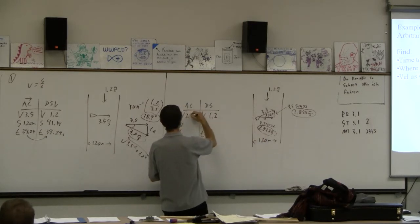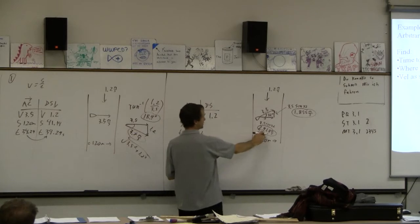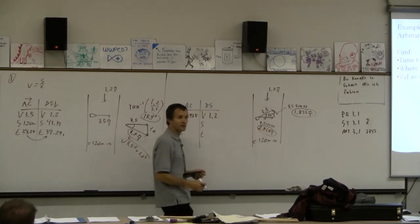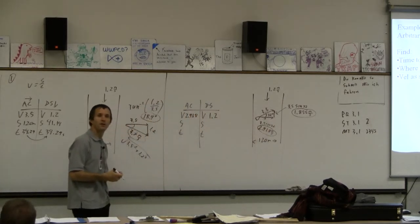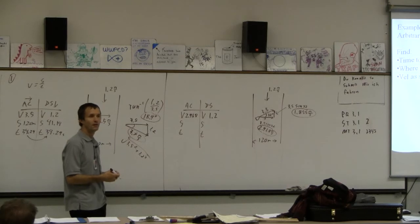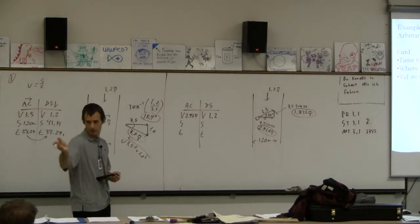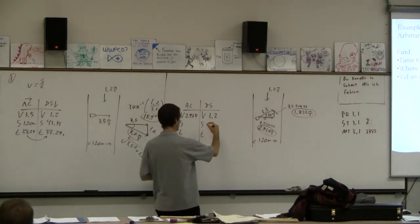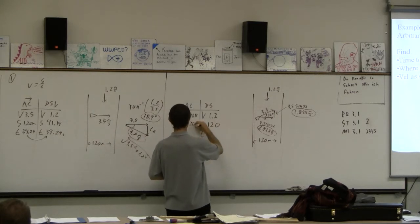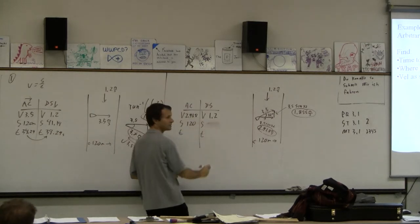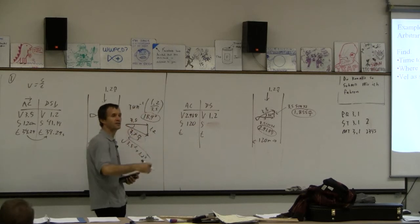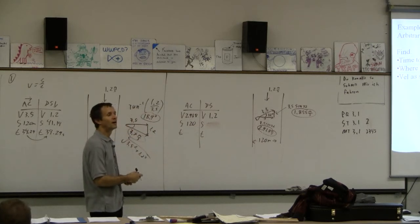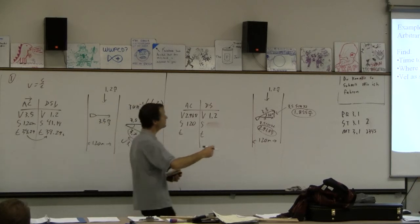Yeah, 2.968. So this across thing is the only thing in town as far as across goes. What else do we know? Displacement across is 120. I put it in the wrong place. Question. Yeah, what do we do with this guy? Where does the 1.855 go?